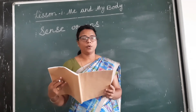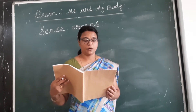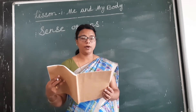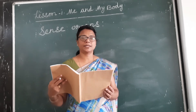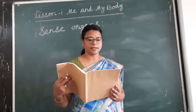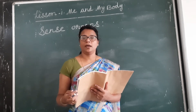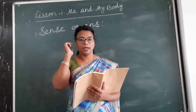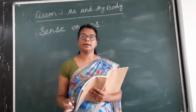Parts of our body that help us feel the world around us are called sense organs. We have five sense organs. The five sense organs are eyes, nose, ears, tongue and skin.